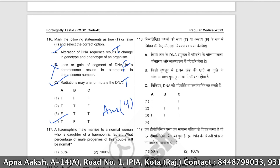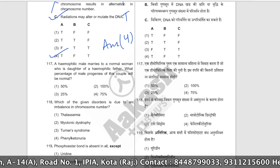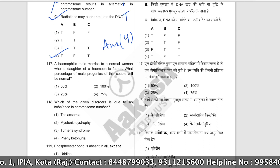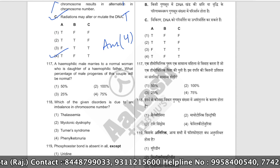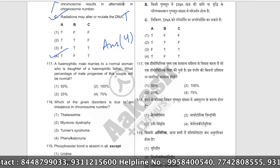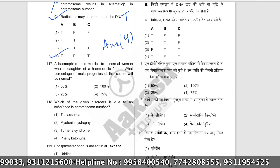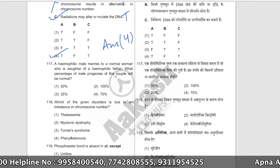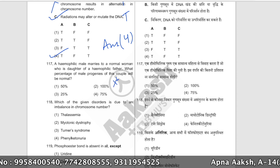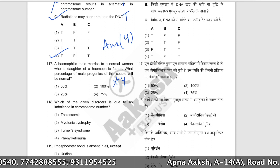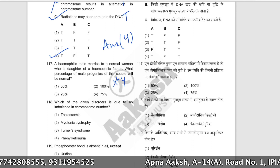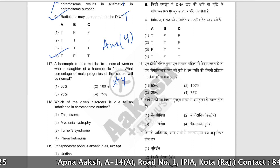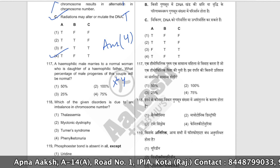A hemophilic male marries a normal woman who is the daughter of a hemophilic father. What percentage of male progenies of this couple will be normal? The male is hemophilic (X^h Y), and the woman whose father was hemophilic must be a carrier (X^H X^h).